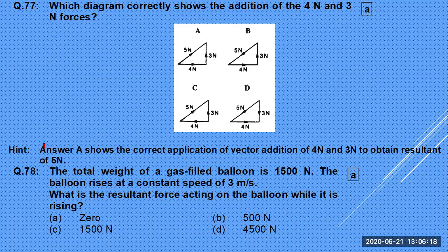Take the square root of 4² + 3² = √25 = 5 N. The total weight of a gas-filled balloon is 1500 N rising at constant speed of 3 m/s. The resultant force is zero because the upward force is balanced by the downward weight.